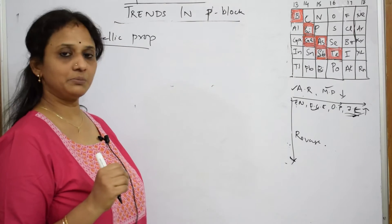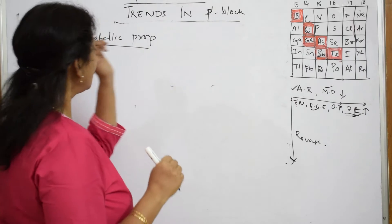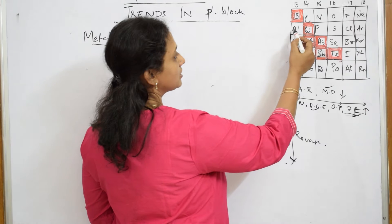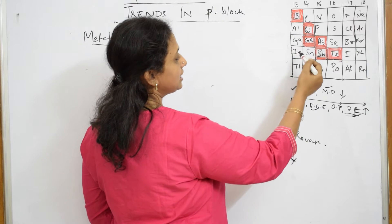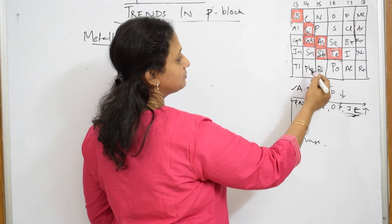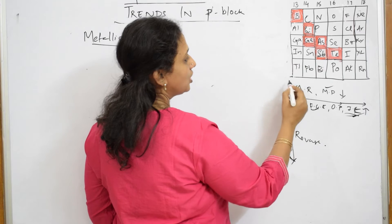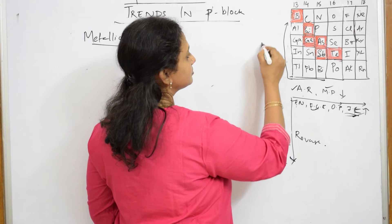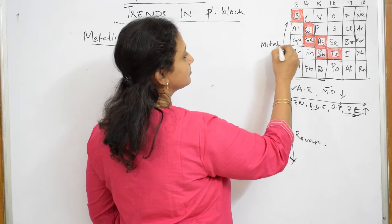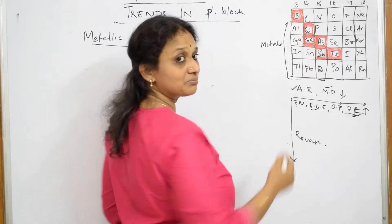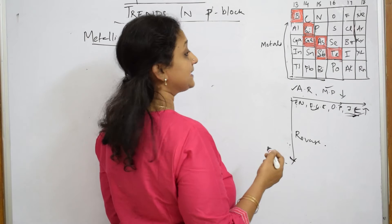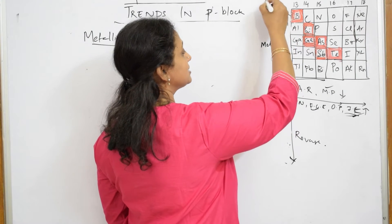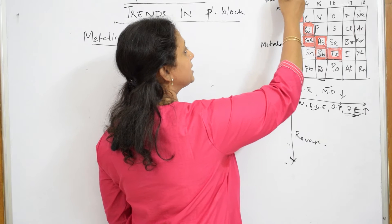When I speak about your p-block elements, in this particular table, from here — aluminium, gallium, indium, tin, thallium, lead, bismuth — all these are metals. And the ones which are marked, as you have studied in grade 9 and 10 in periodic classification of elements, these are all called metalloids.